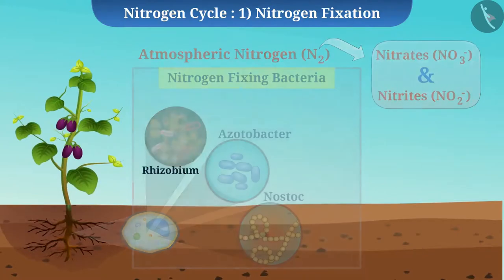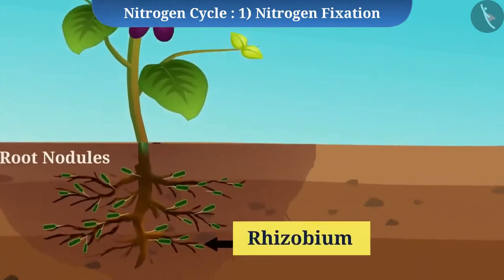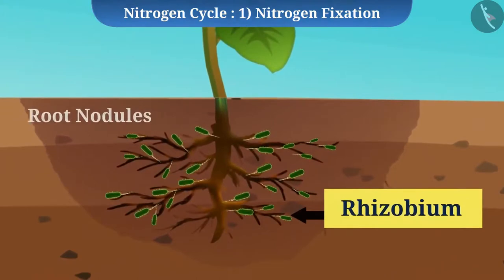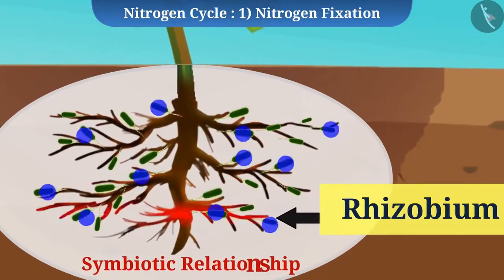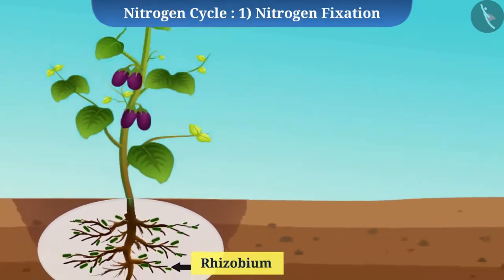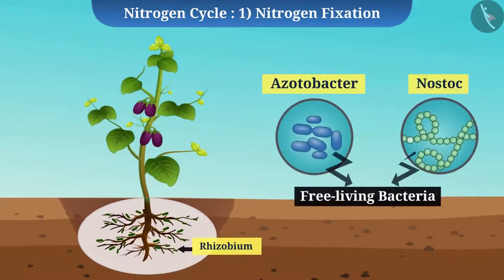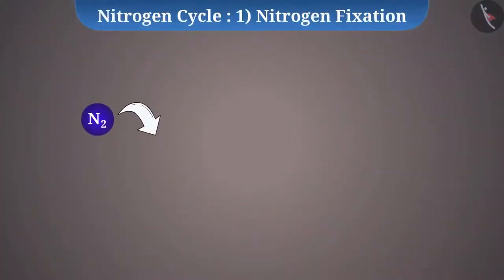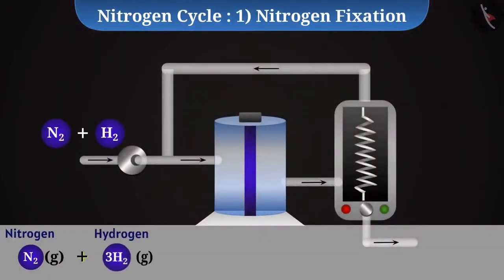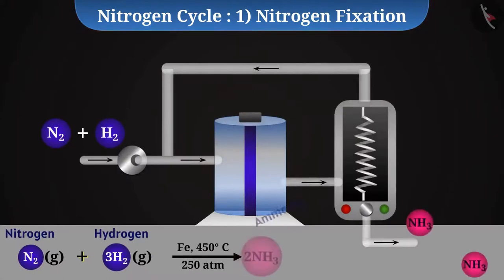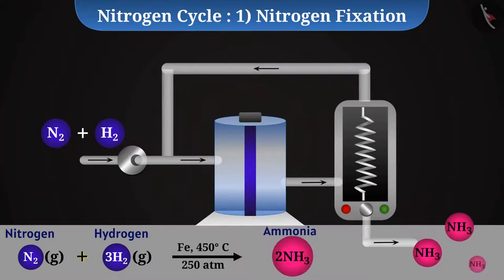Bacteria such as Rhizobium live in root nodules of leguminous plants and maintain a symbiotic relationship with the plants. In symbiotic relationships, both organisms benefit from each other. Bacteria such as Azotobacter and Nostoc are free-living bacteria. Nitrogen can also be fixed industrially — for example, nitrogen is combined with hydrogen at high temperature and pressure to obtain ammonia, which is later converted into various fertilizers such as urea.